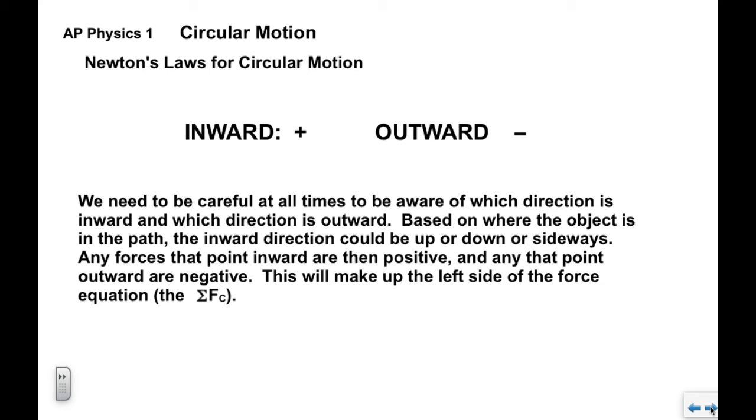Very simply, forces that point in we're going to say are positive and forces that point out we're going to say are negative. We need to be careful at all times—we got to be aware of which direction is in and which direction is out based on where the object is in the path. The inward direction could be up or down or sideways but we got to be very clear about it. Any forces that point inward we consider to be positive and any forces that point outward we consider to be negative. This will make up the left side of the force equation sigma fc. The right side we know is automatically mv squared over r.